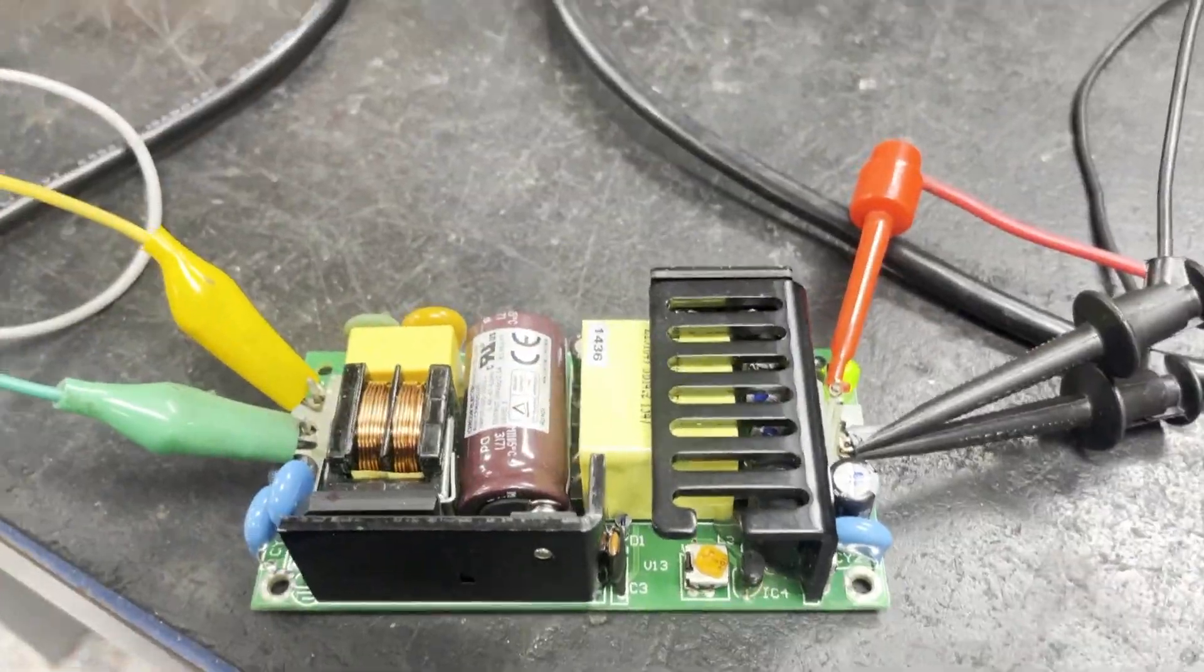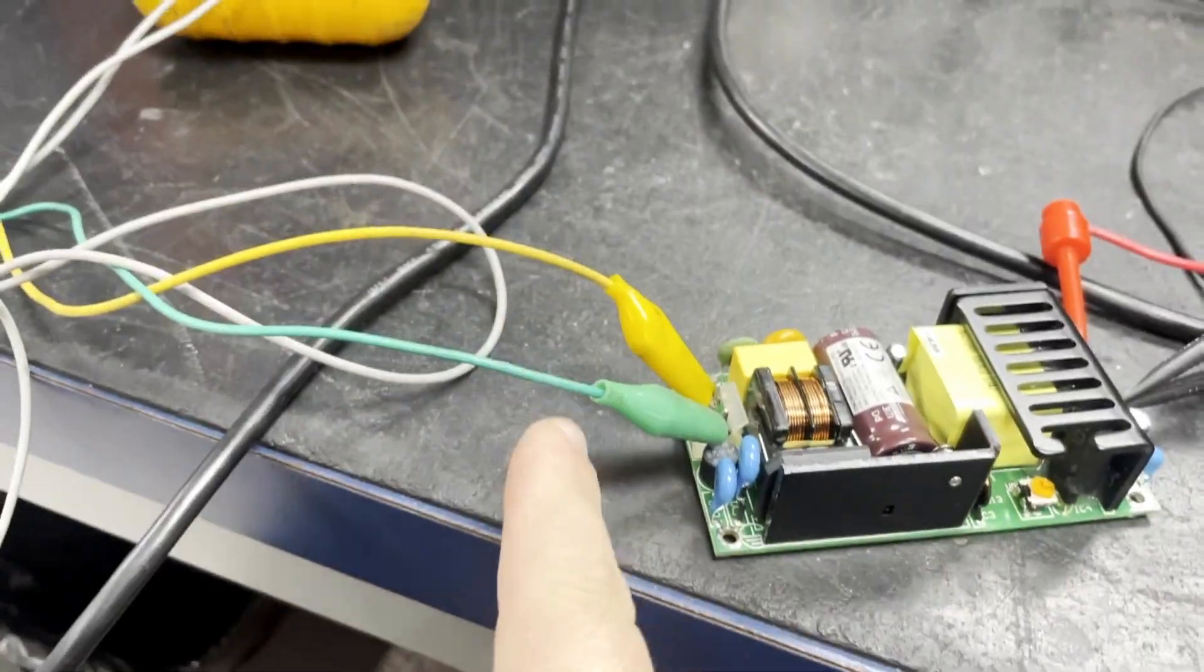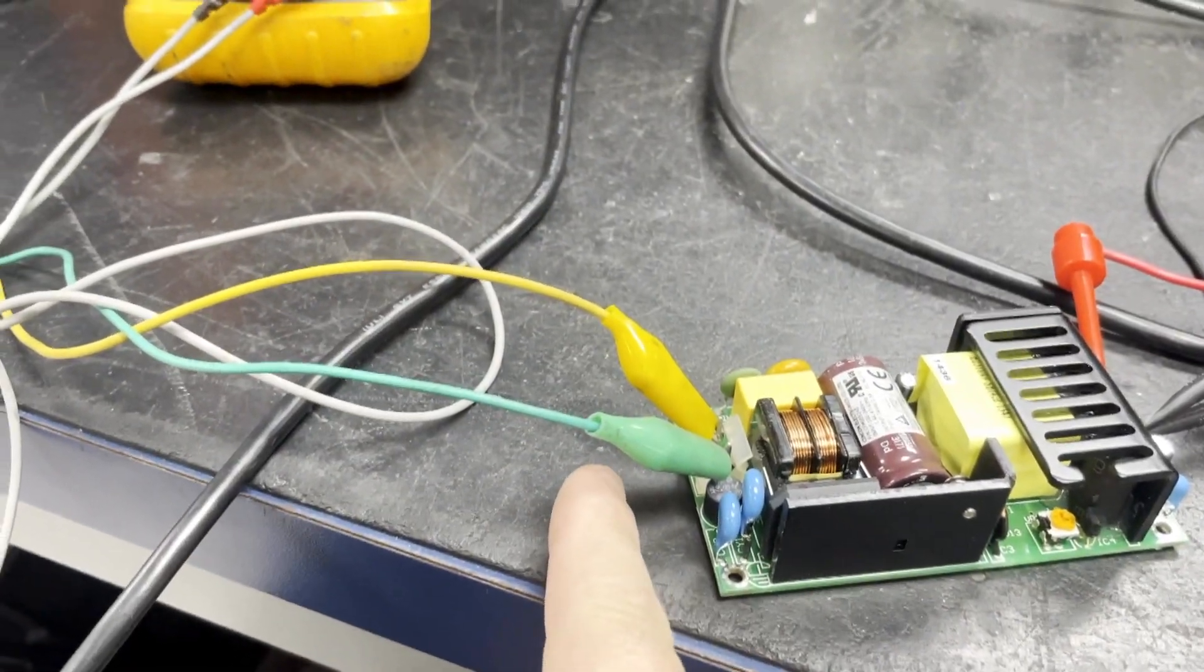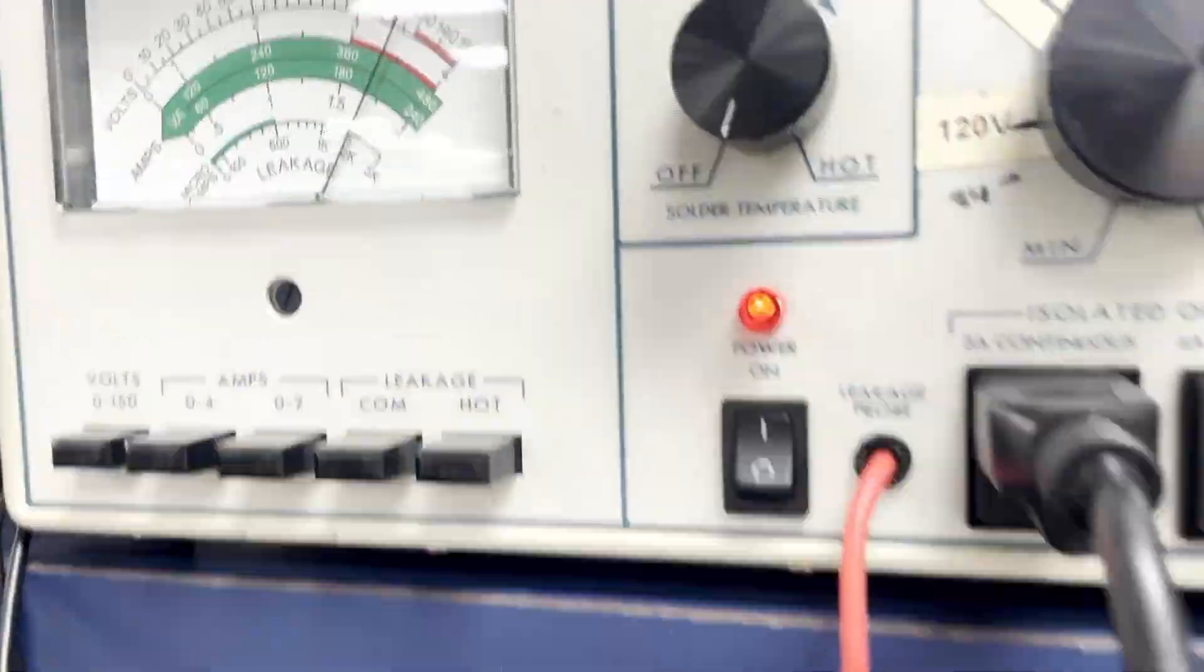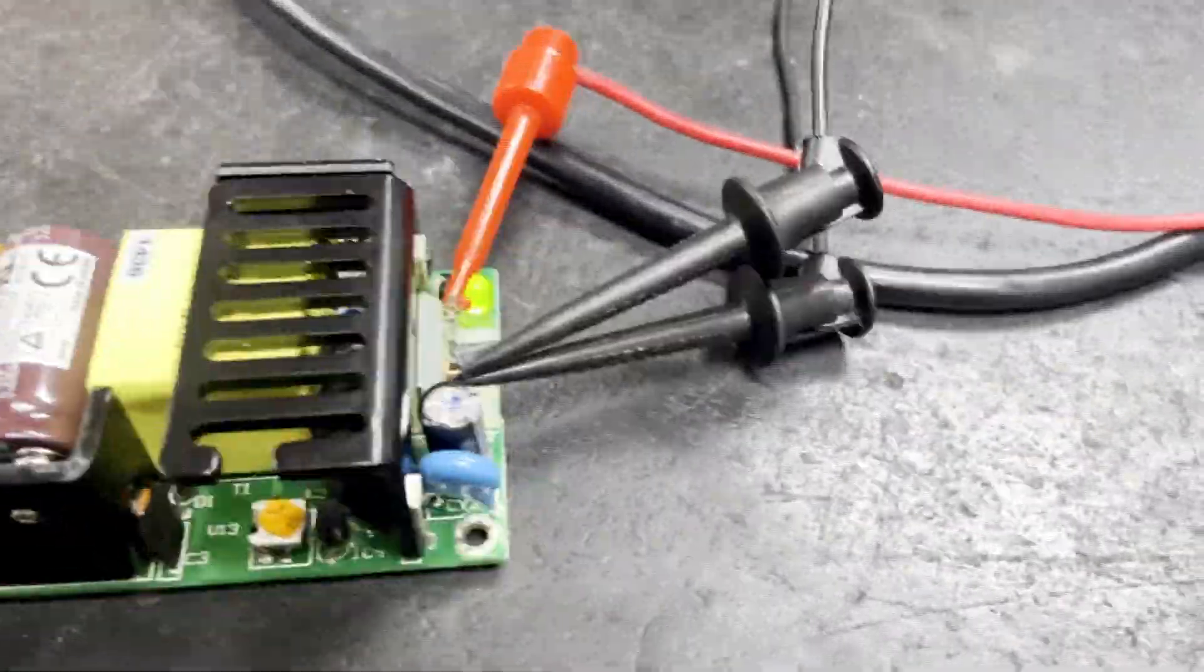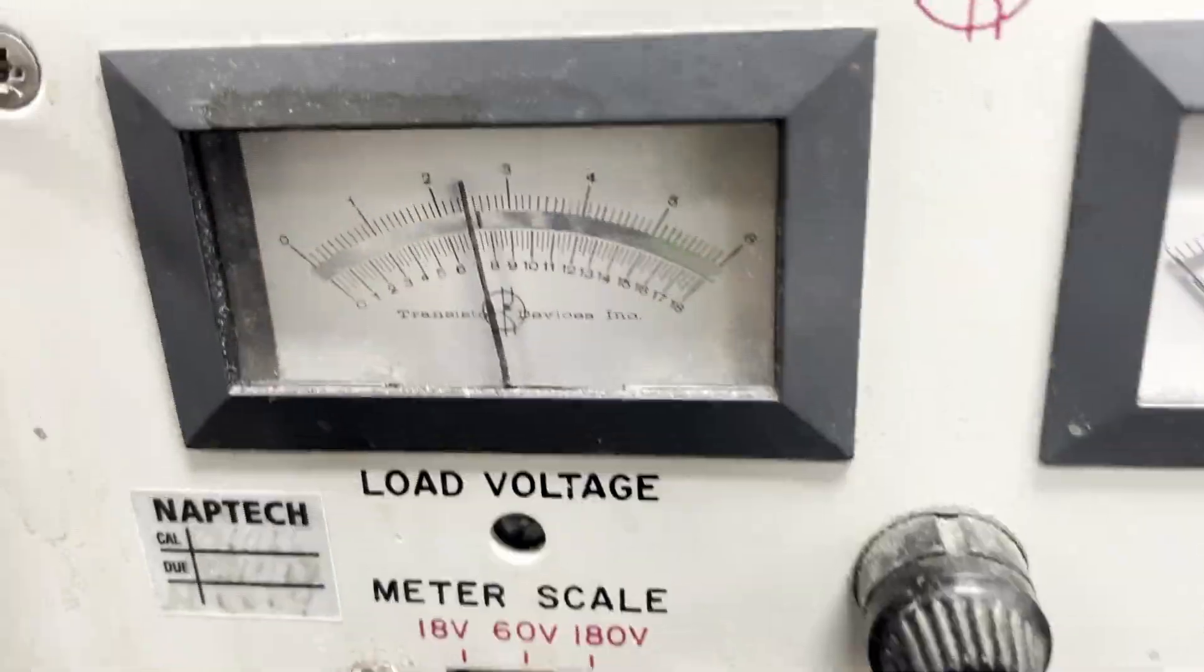Here we have our 120 volts plugged up to the input side of the supply, and we should be getting an output of 24 volts. And here you can see we do.